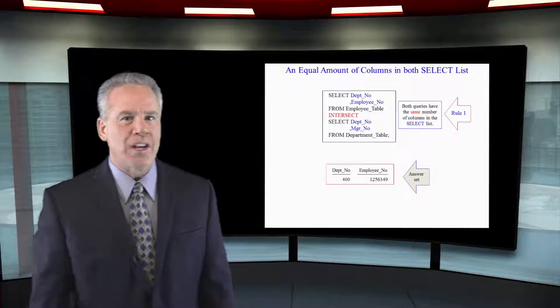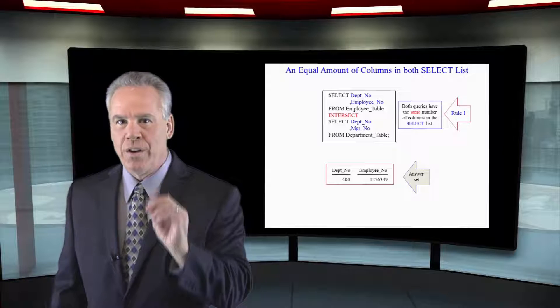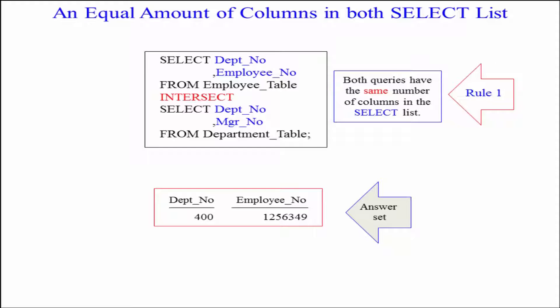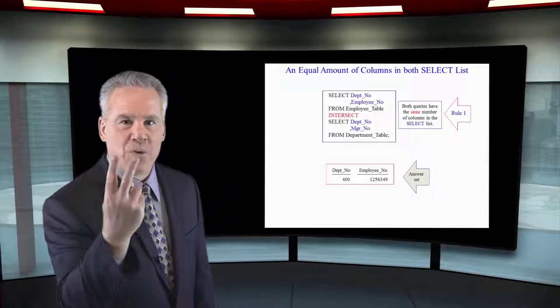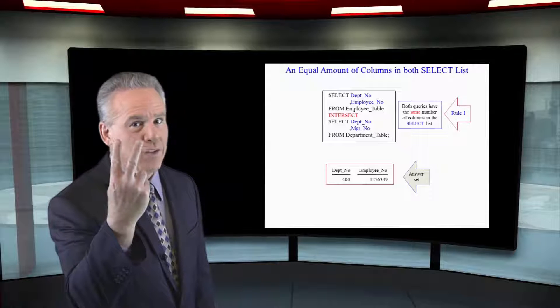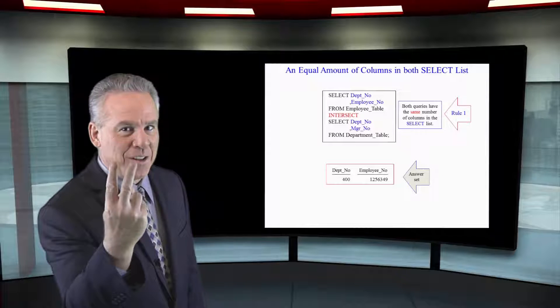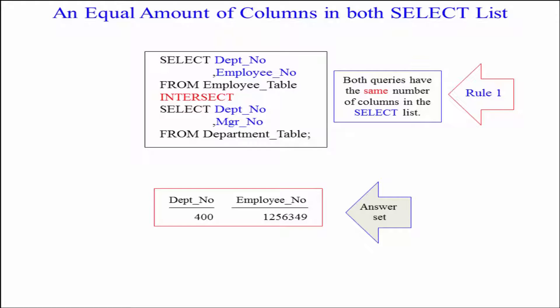What I need you to understand right now is rule number one. Take a look at this query. We're selecting department number and employee number from the employee table, then intersecting and selecting department number and manager number from the department table. Rule one: you have to have an equal amount of columns in the top—we have two—and an equal amount of columns in the bottom—we have two. Otherwise they wouldn't be able to compare the answer sets and eliminate duplicates.